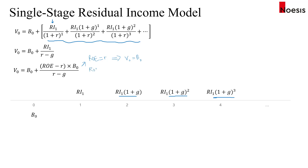If ROE is greater than R — meaning the company is expected to generate more returns than required — then the intrinsic value will be greater than book value per share. If ROE is less than R, the second term is negative, so V0 will be less than the current book value per share.